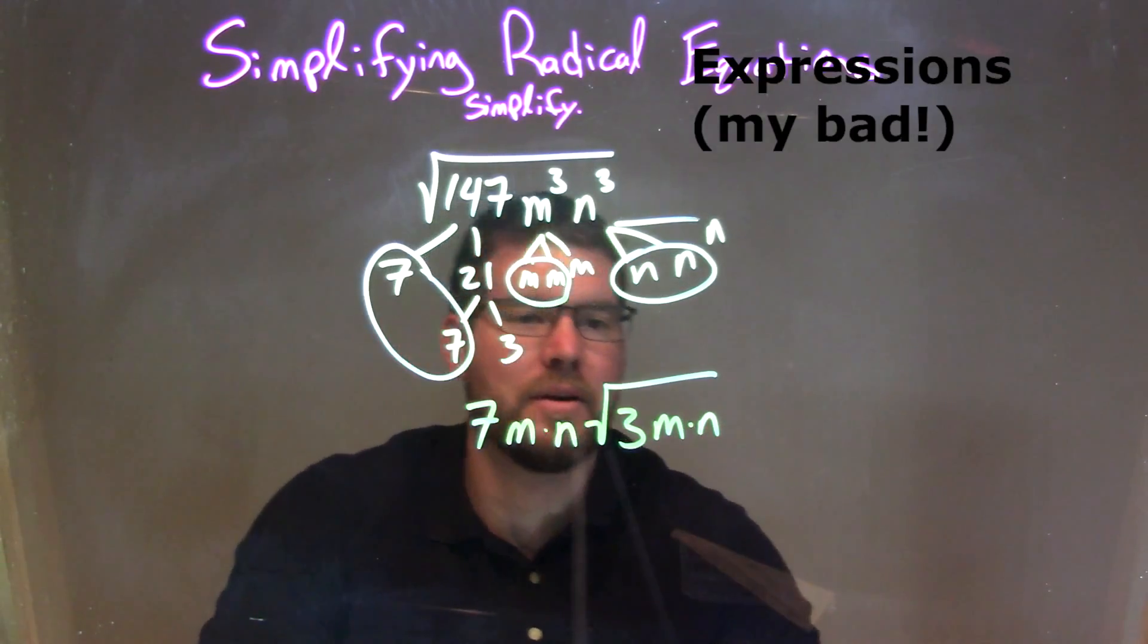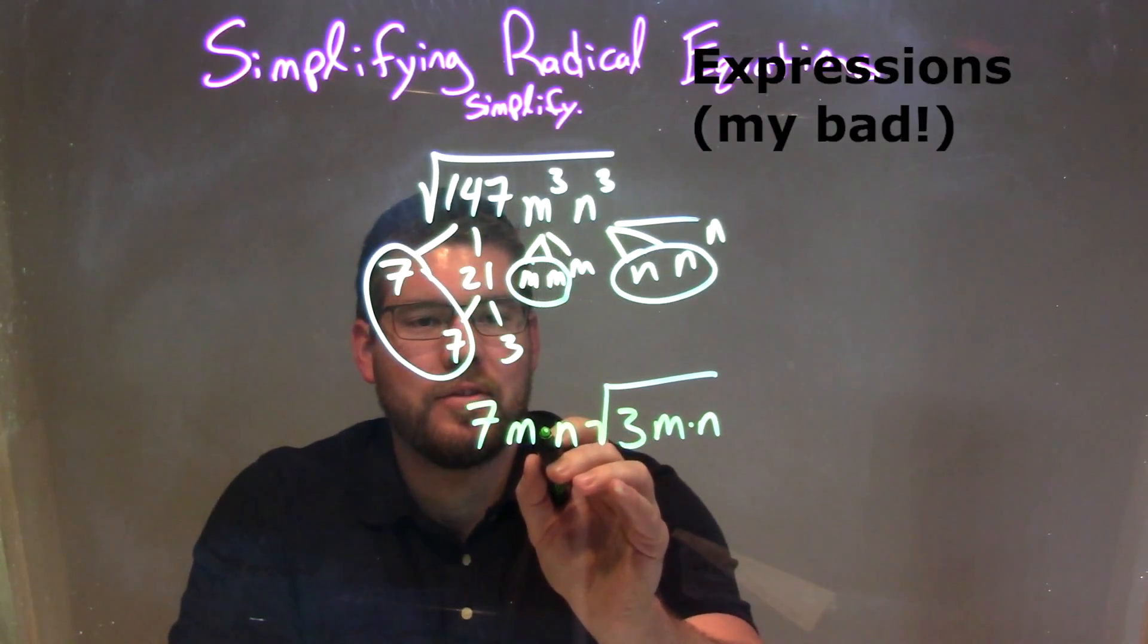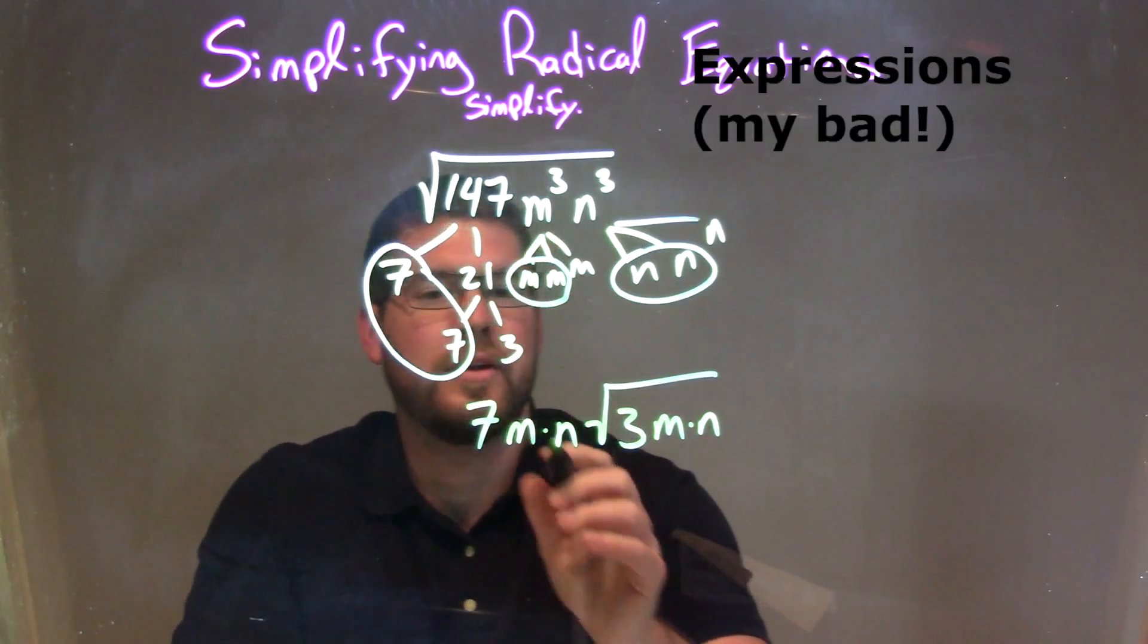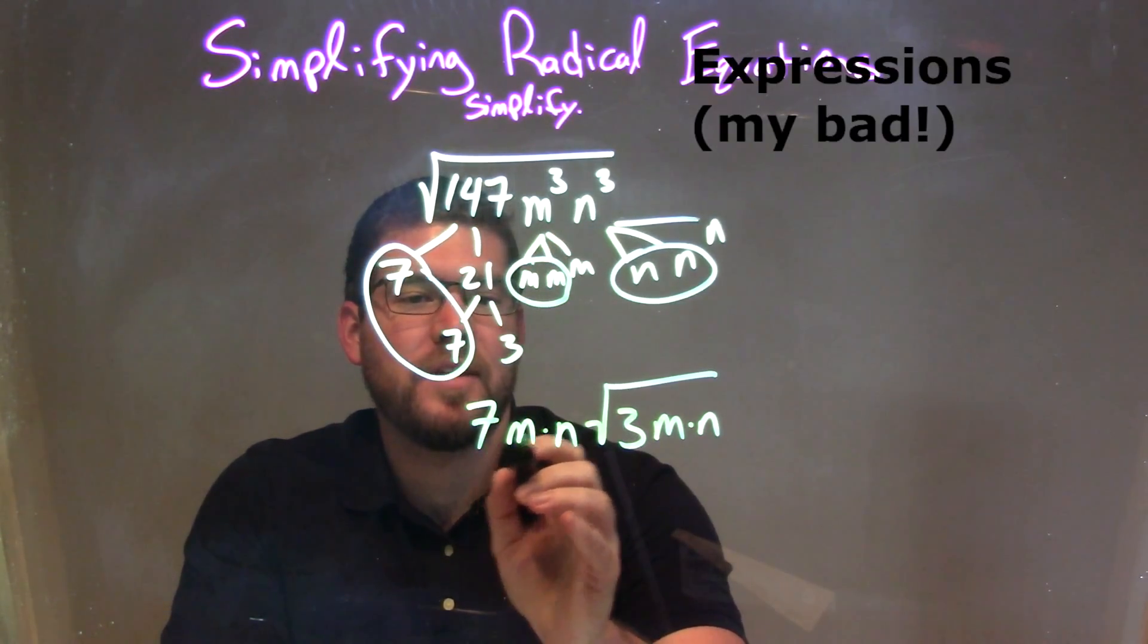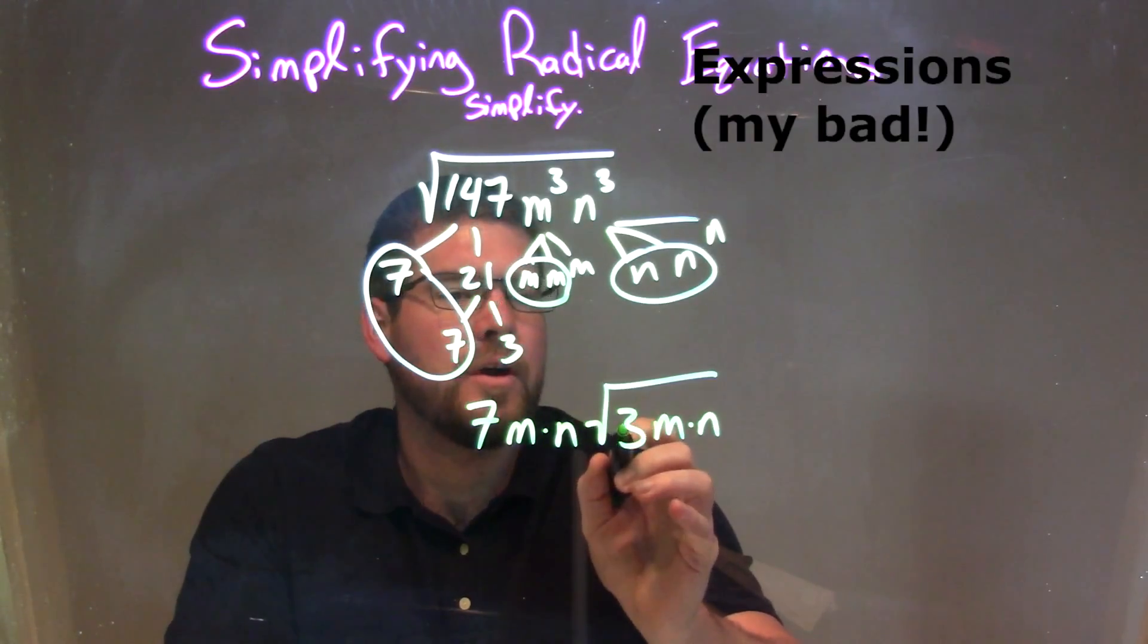7m times n, maybe put a multiplication sign there to make it look clearer. Anyway, our final answer being 7mn times the square root of 3mn.